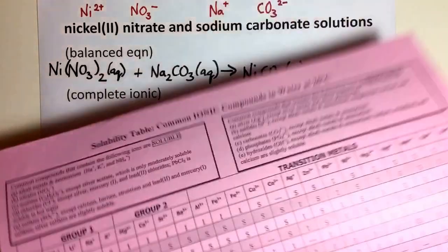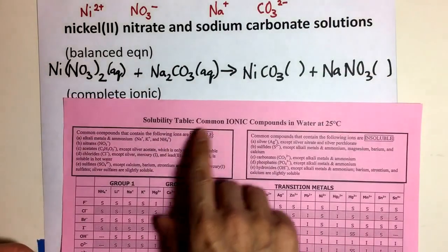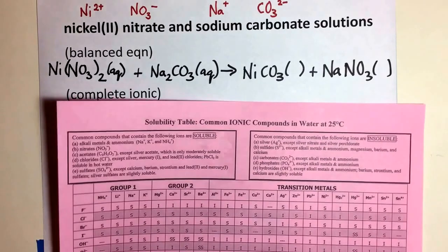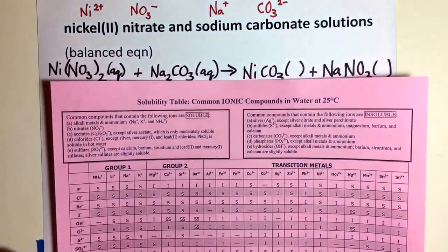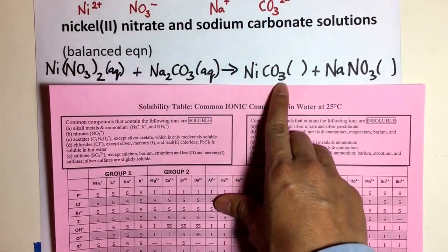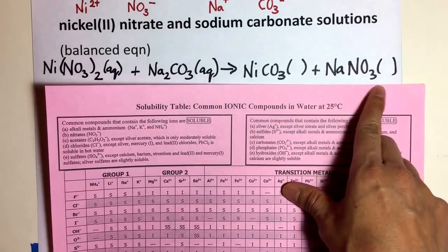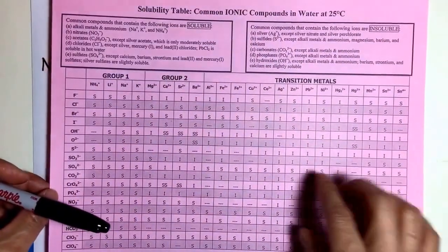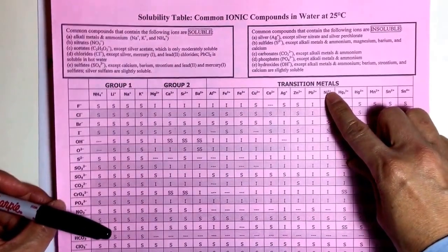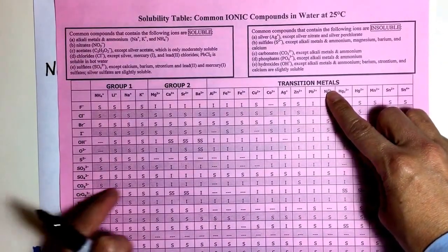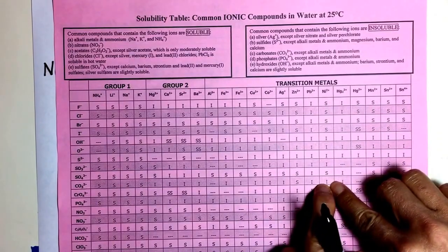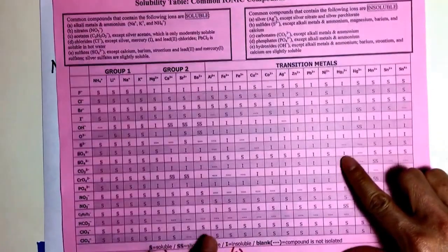If you look at your pink sheet, it says 'common ionic compounds in water at 25 degrees Celsius.' I have to look at nickel two carbonate as well as sodium nitrate. For nickel two carbonate — nickel two plus is right here, and carbonate is right here. I match them up and I see that it's insoluble. 'I' means insoluble. Anytime I have something insoluble, it won't dissolve, so it stays as a solid.